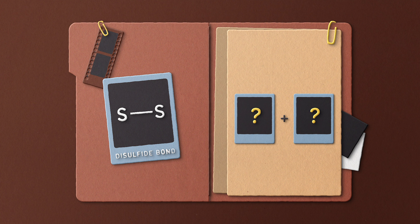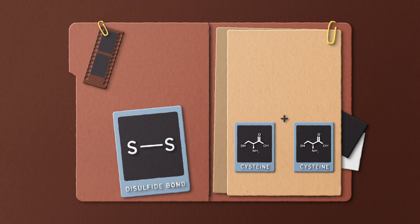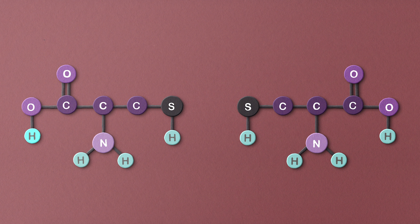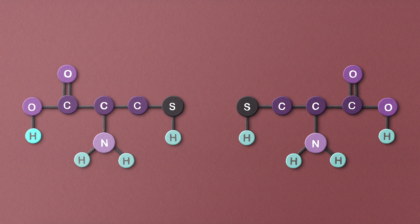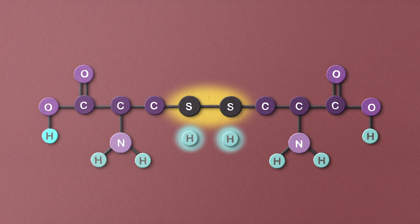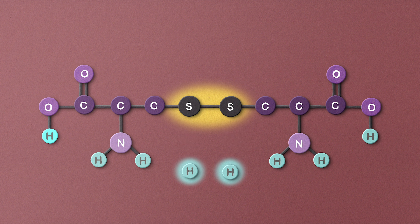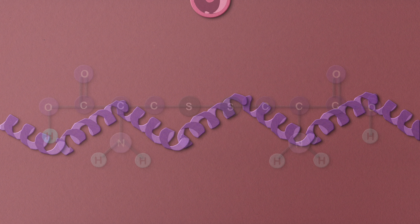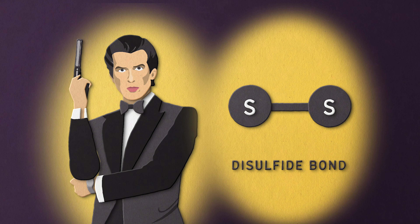Now back to disulfide bonds. Disulfide bonds are covalent bonds that join two cysteine molecules — we love a full circle moment. Disulfide bonds join the cysteine molecules by their thiol groups, linking up the two sulfur molecules and ditching two hydrogen atoms and two electrons in the process. Disulfide bonds are extremely strong. They don't just link two amino acids — they contribute to the tertiary structure of a protein, too. Maybe a cool James Bond reference wasn't too out of the disulfide bonds' league. They are pretty cool.